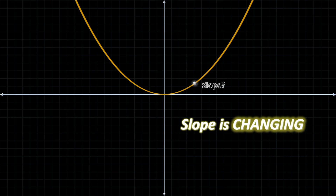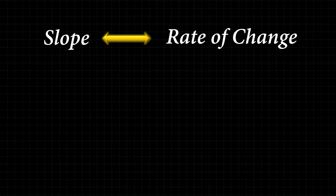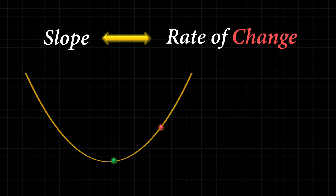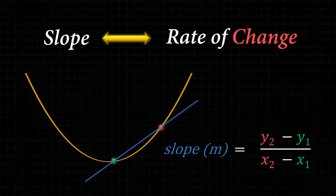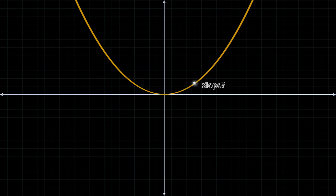Recall the slope is the same thing as the rate of change — the keyword here being change. And in order to calculate the rate of change, there first has to be change, which means we will need to go from one point to another point. That's why the slope equation has two sets of coordinates. So in terms of static math, it is impossible to find the slope at a particular point on a curve.